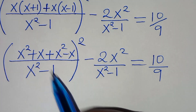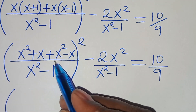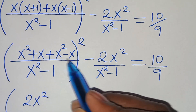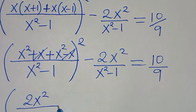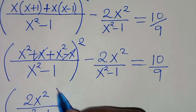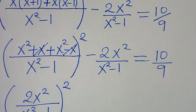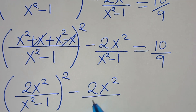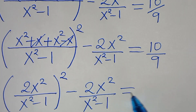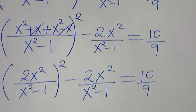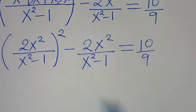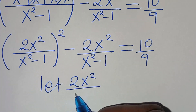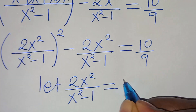The next step: x² + x² = 2x², and x - x = 0, so the numerator simplifies to 2x² divided by x²-1, all squared. We now let u = 2x²/(x²-1).